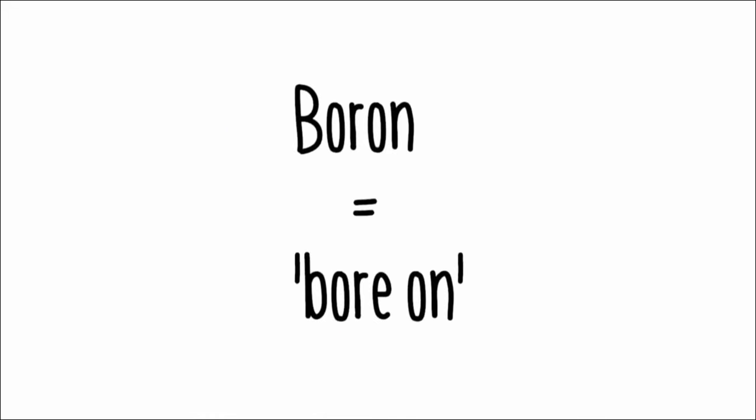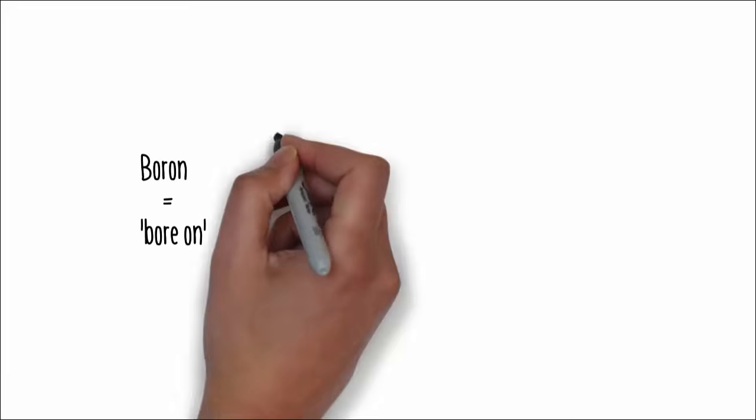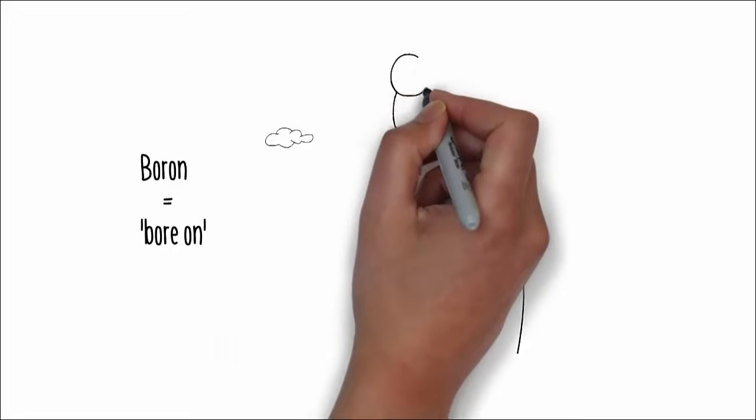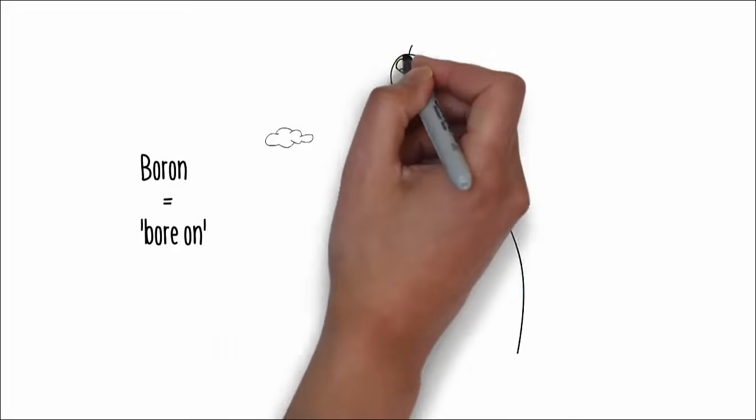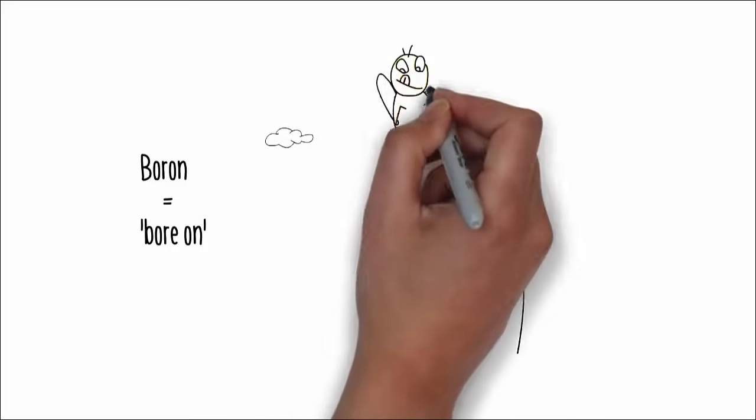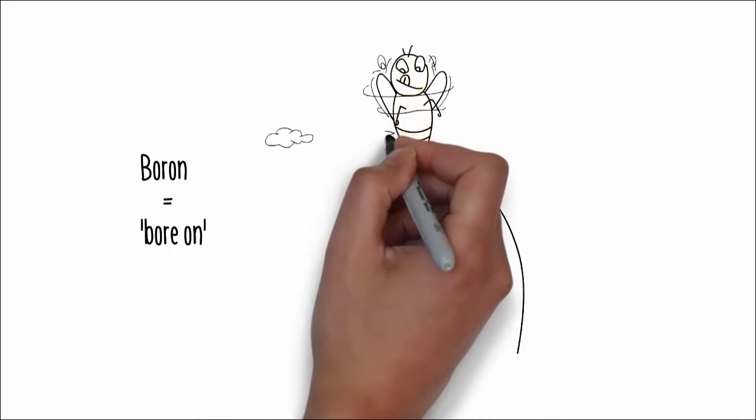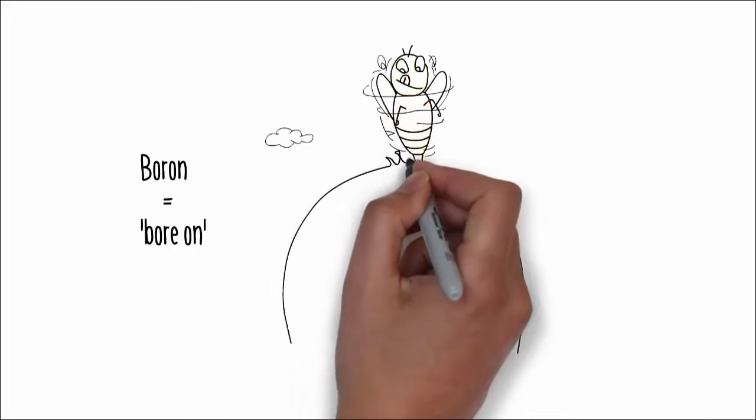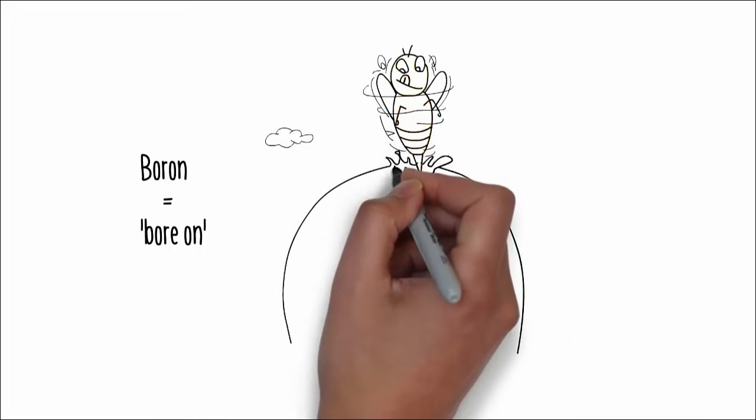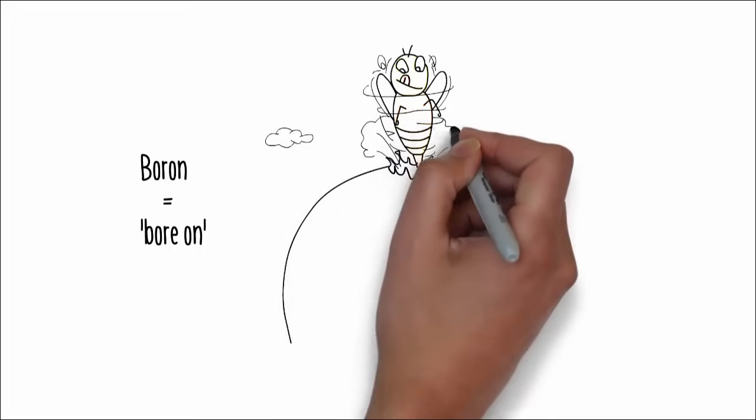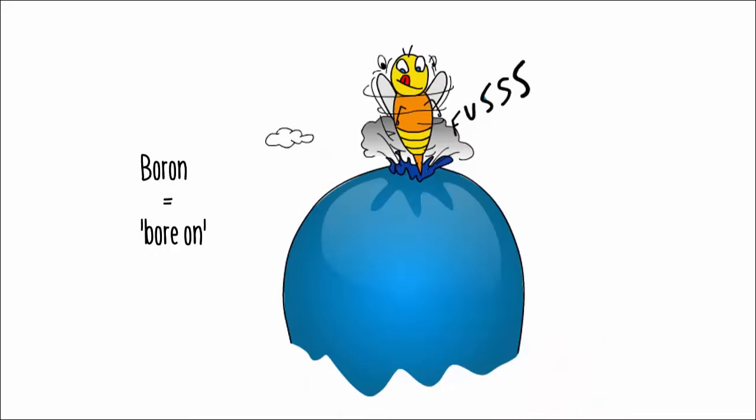The fifth element is boron. We can break up the word boron into bore and on. The word bore, b-o-r-e, can mean to drill a hole. Picture now the bee after tasting the balloon. It uses its stinger, pierces the balloon and starts to spin around in a drilling motion. The bee has landed on the balloon, tasted it, and now it's started to bore on the balloon. When you picture the bee begin to bore on the balloon, you'll remember the fifth element, boron.